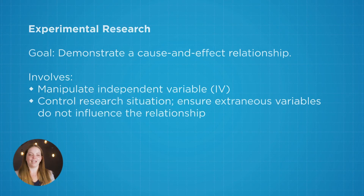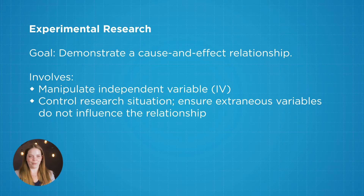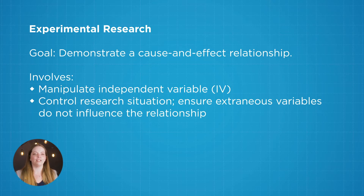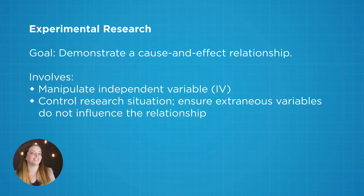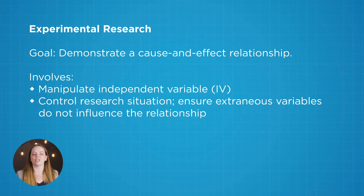So for our first type of design, experimental design, we have both a manipulated independent variable and random assignment. And because we have this kind of tight control over our study, we are actually really trying to determine if there is a cause and effect relationship between the two variables of interest. So what we're trying to establish here is if our independent variable is actually causing that change in the dependent variable. In other types of design, we're not really able to say that it's a cause and effect relationship, but in an experimental design, that's really what we're aiming to see — the cause and effect.